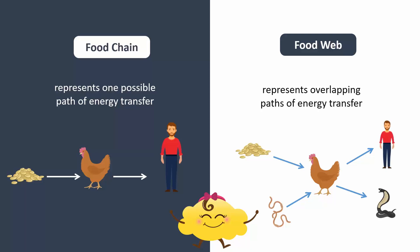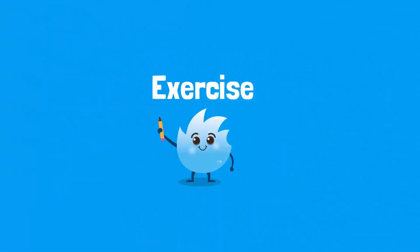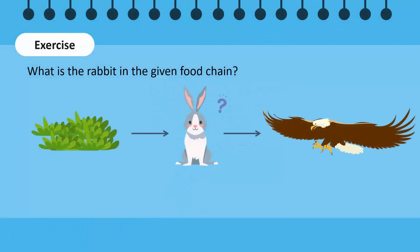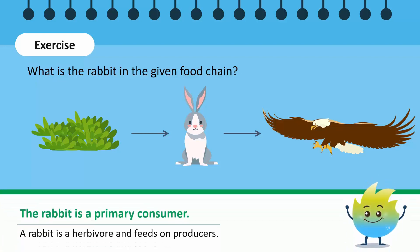Well done! Let's do a quick exercise. What is the rabbit in the given food chain? Is it a producer, a primary consumer, or a secondary consumer? A rabbit feeds on plants which are producers. It is a herbivore, which means it only eats plants. It is eaten by an eagle which is a secondary consumer. So a rabbit is a primary consumer.